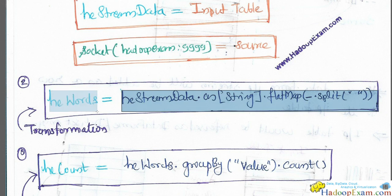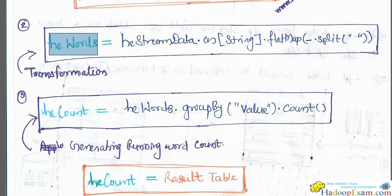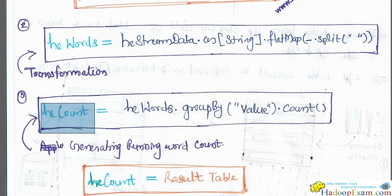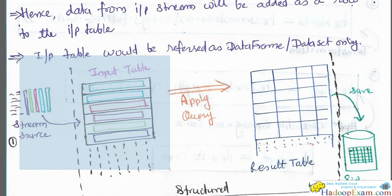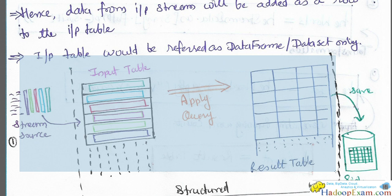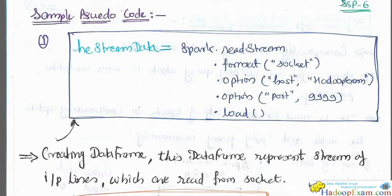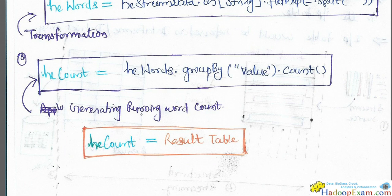The socket here is the source — from where we read the data. Now we apply some transformation on `heStreamData`, which is our input table DataFrame. I'll split it and create words out of this — that is `heWords`. This is a simple transformation, and you create a new DataFrame. You can apply as many transformations as you want on the data before doing any output or writing to the sink. Now `heCount` is: from `heWords`, do a group by on the value column and count the words.